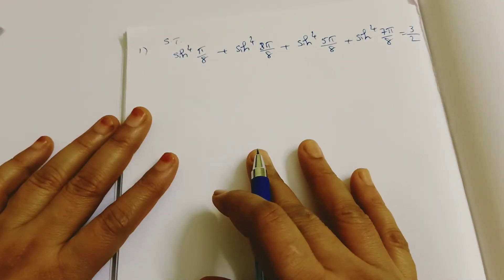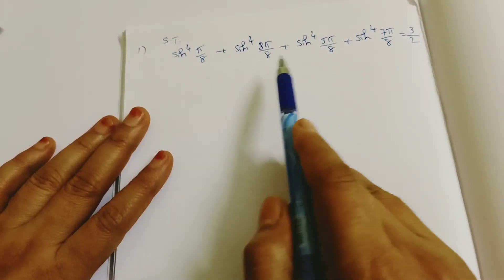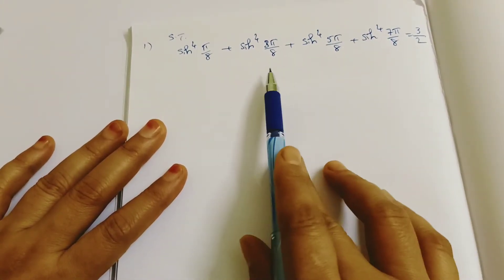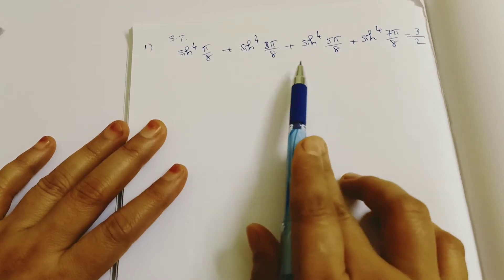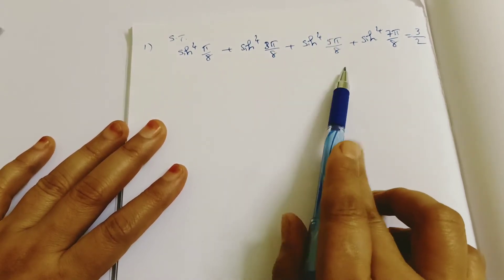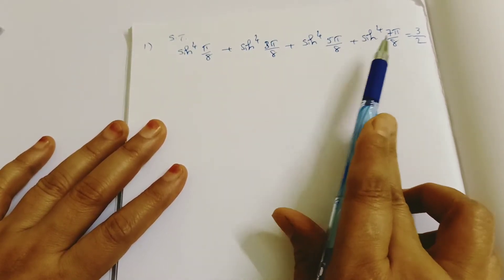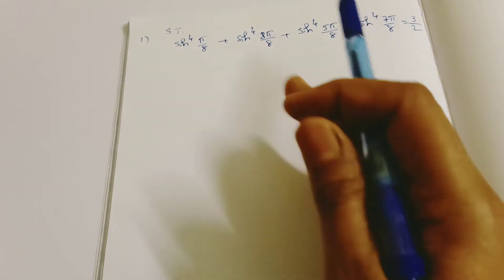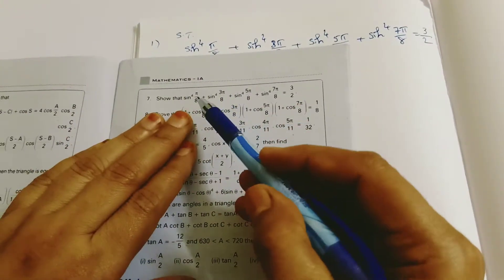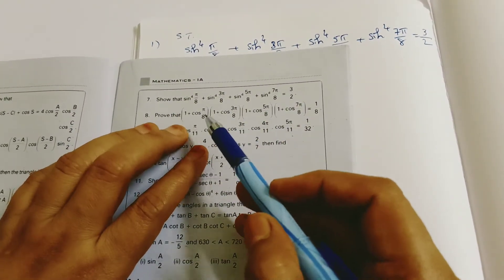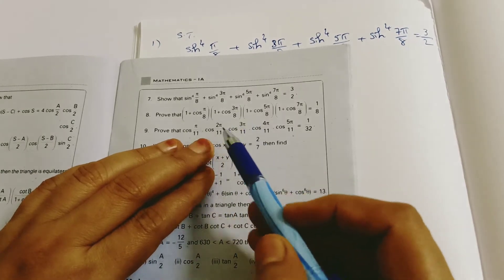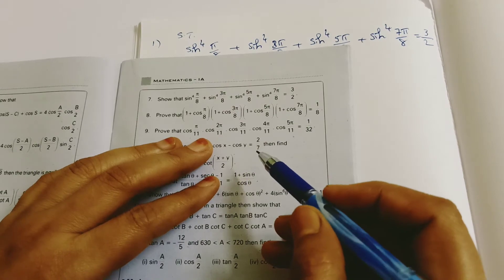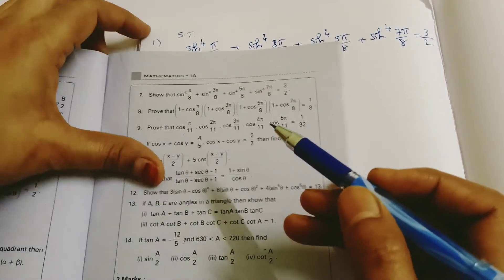Hi my dear students, welcome back to my channel. Today I am discussing important trigonometry questions. See how to find this type of question: sin⁴(π/8) + sin⁴(3π/8) + sin⁴(5π/8) + sin⁴(7π/8) = 3/2. Today I am explaining these three types of questions. They are very important questions. Please subscribe, share, and like also.